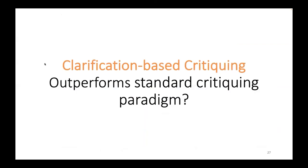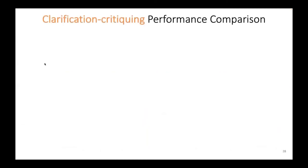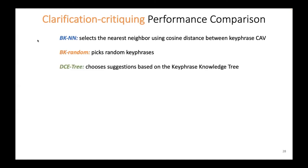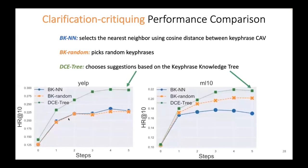We now evaluate whether clarification-based critiquing outperforms standard critiquing. We compare three methods: BKVAE with nearest-neighbor clarification using cosine distance between keyphrase concept activation vectors; BKRandom, which picks random keyphrases as clarification candidates; and DCETREE, which chooses suggestions based on the keyphrase knowledge tree. DCETREE outperforms the baselines consistently for both datasets with a remarkable performance margin. On the Yelp dataset, random selection even outperforms nearest-neighbor, indicating that many nearest-neighbor clarification proposals may be highly suboptimal.